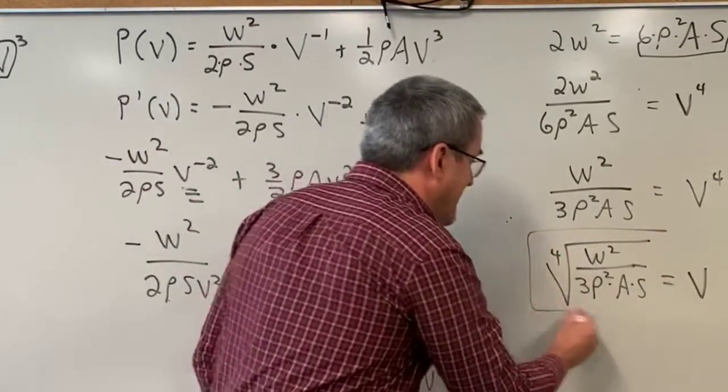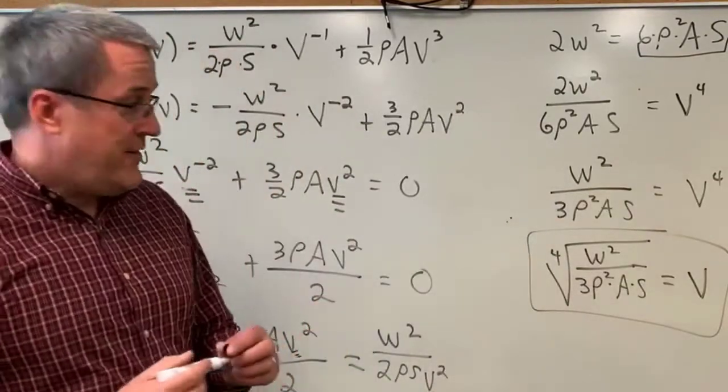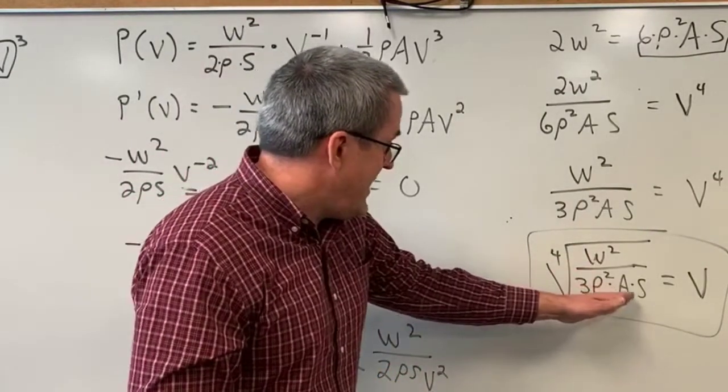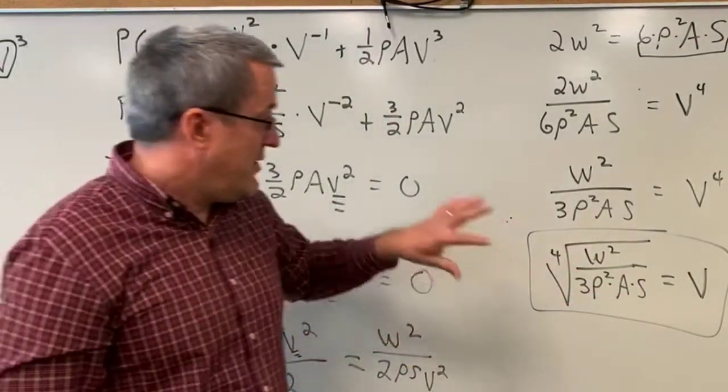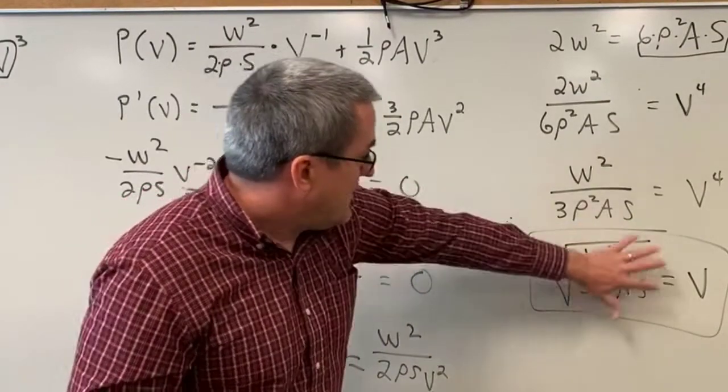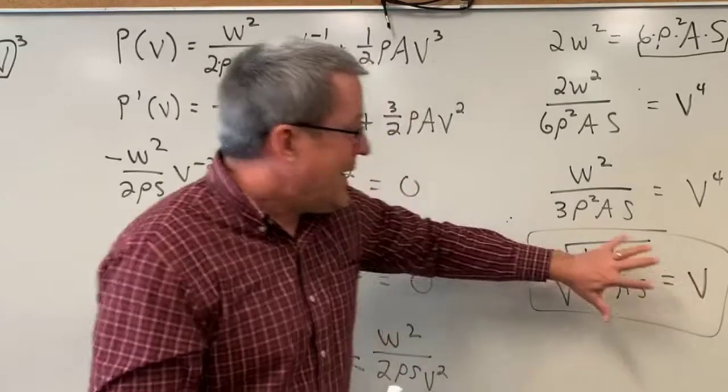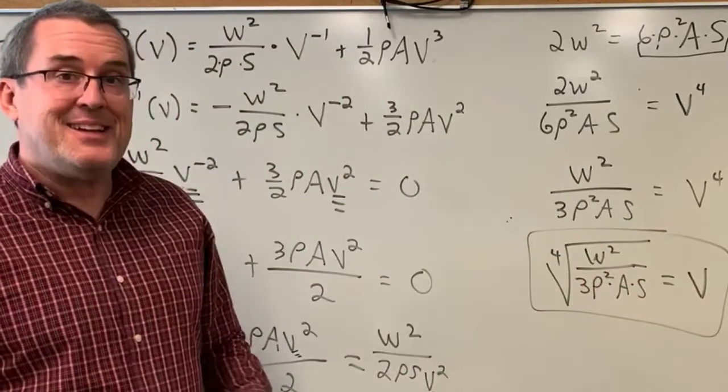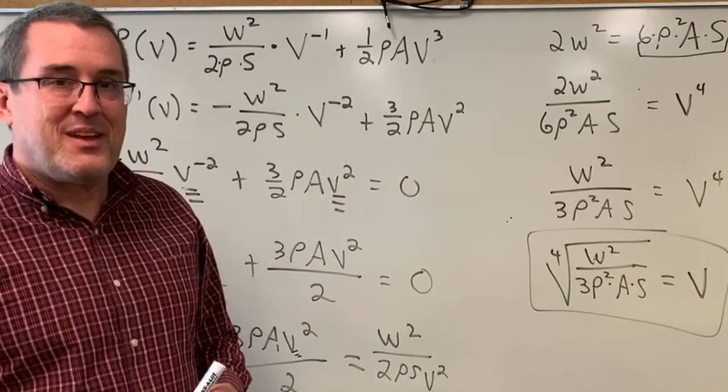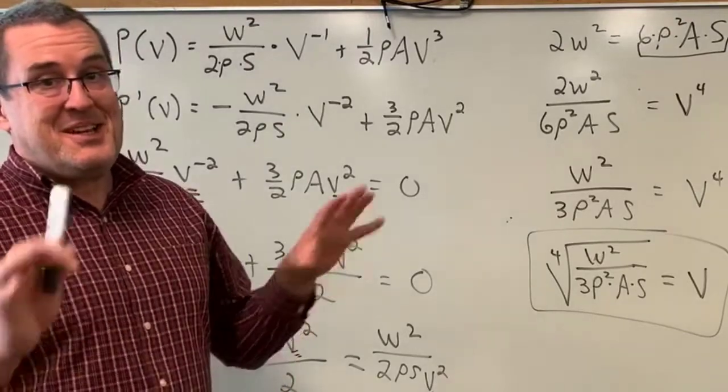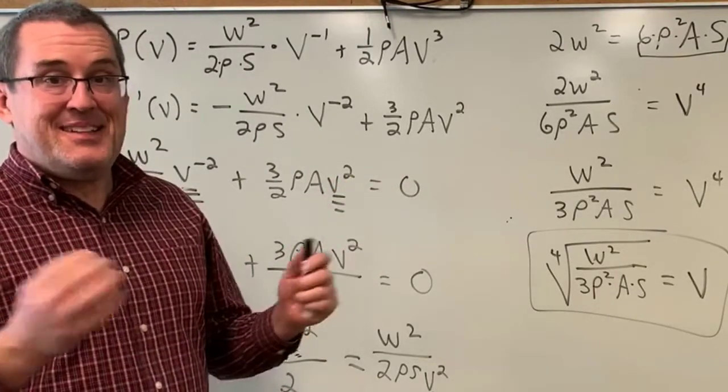This is a formula that would give for whatever W rho A S that we have for a particular bird, plug them all in, we will know if the bird flies at that velocity, that relative speed, it will minimize the power needed to maintain flight. Let's go back to Desmos and kind of put this all back together and see if you can see the connections between the graph and this formula.